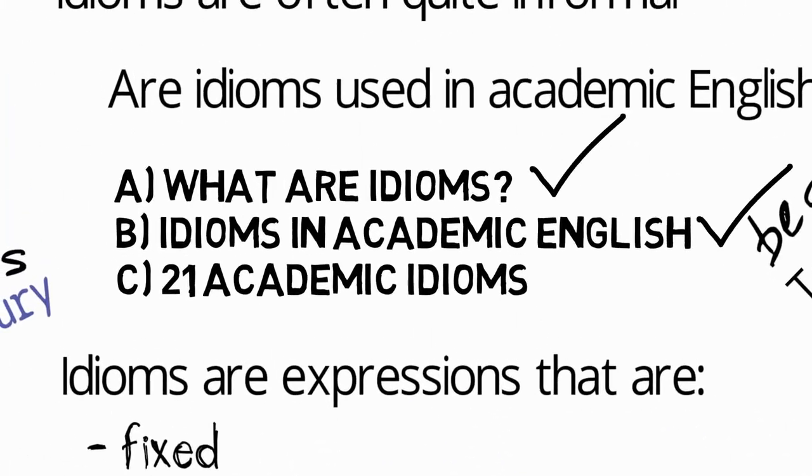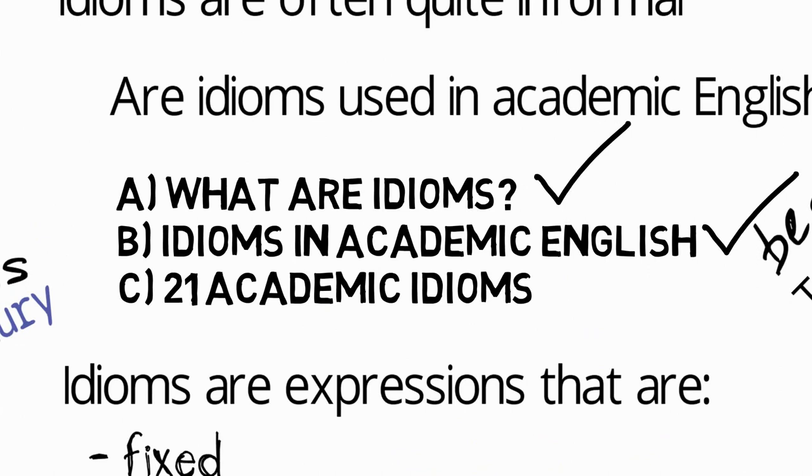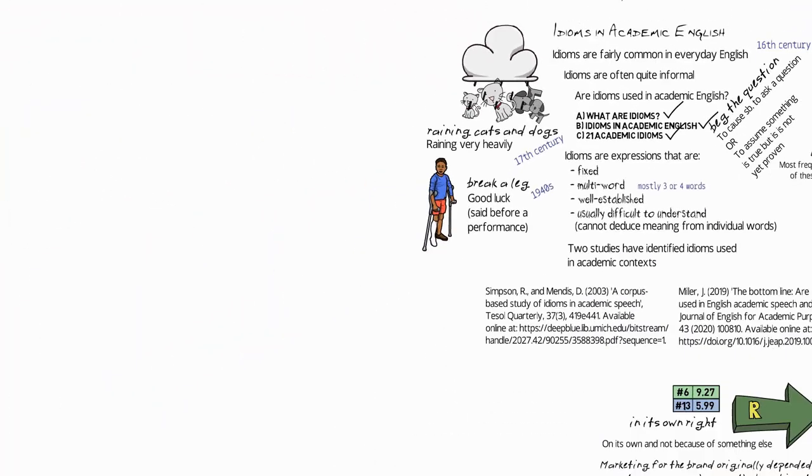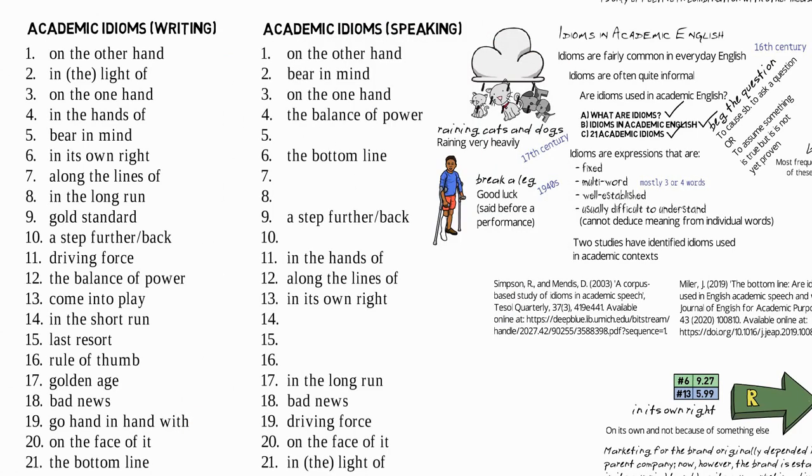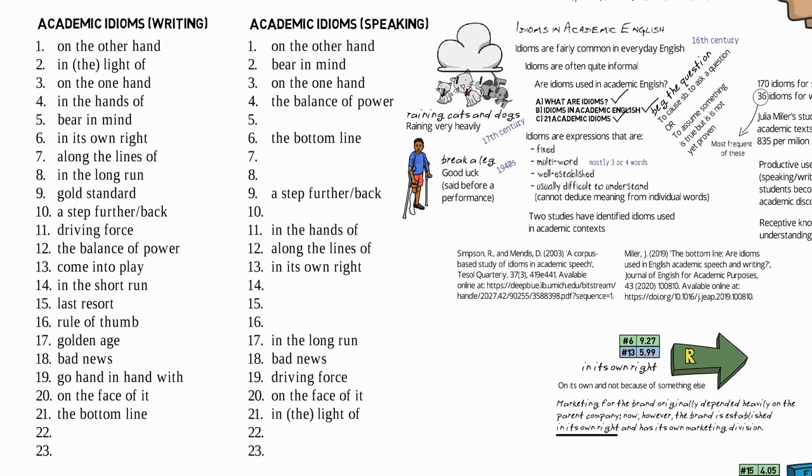So that's it. We've seen briefly what idioms are, we've seen the background to idioms in academic English, and we've seen in detail 21 academic idioms. Just to summarize, here is a complete list of the idioms that we've seen. As I said earlier in the video, these are the most frequent idioms for academic English writing. However, as we've seen, many of these are also very frequent in academic English speaking. In fact, they account for 14 of the first 21 idioms for academic speaking.